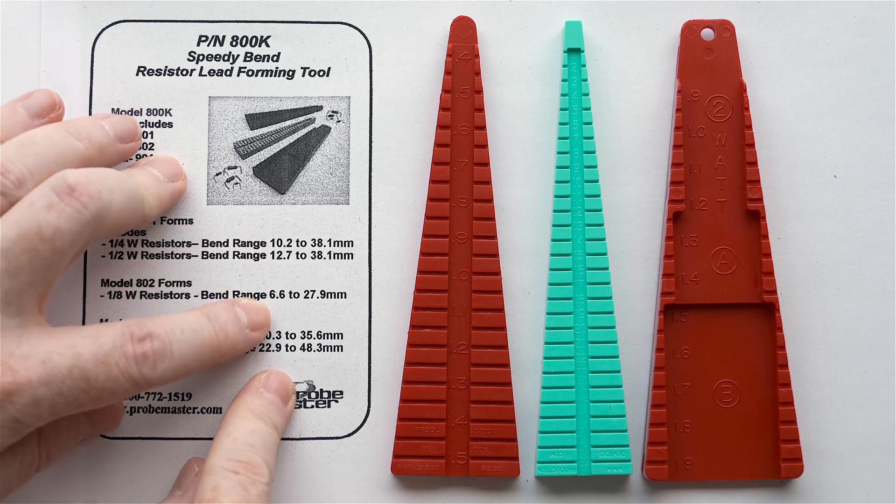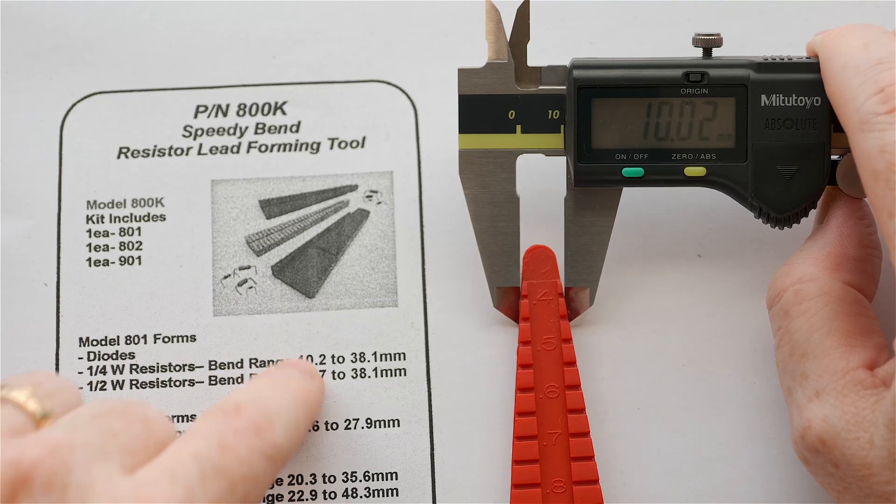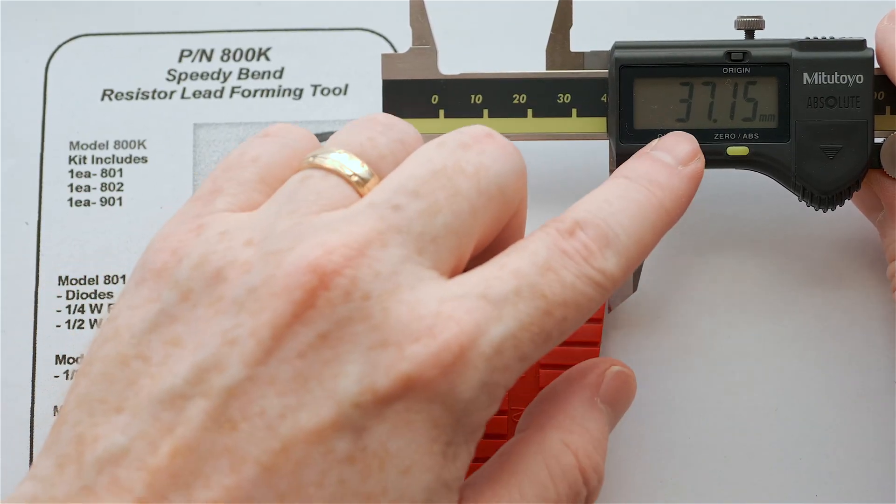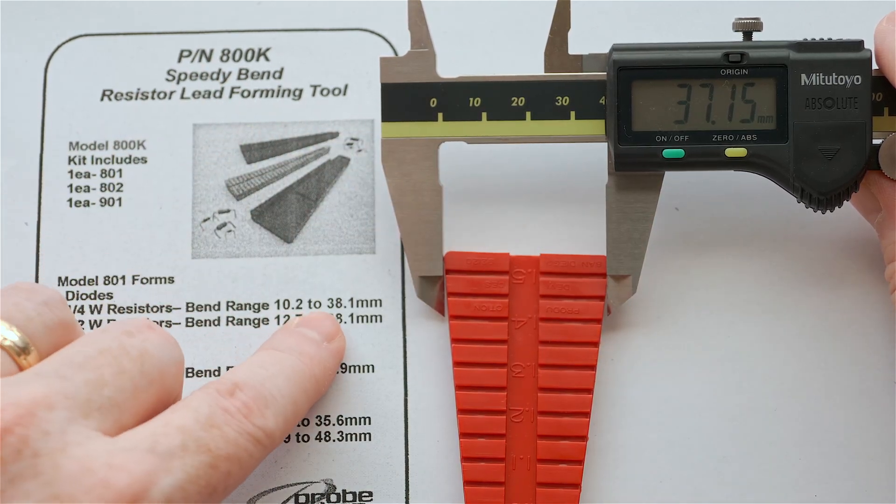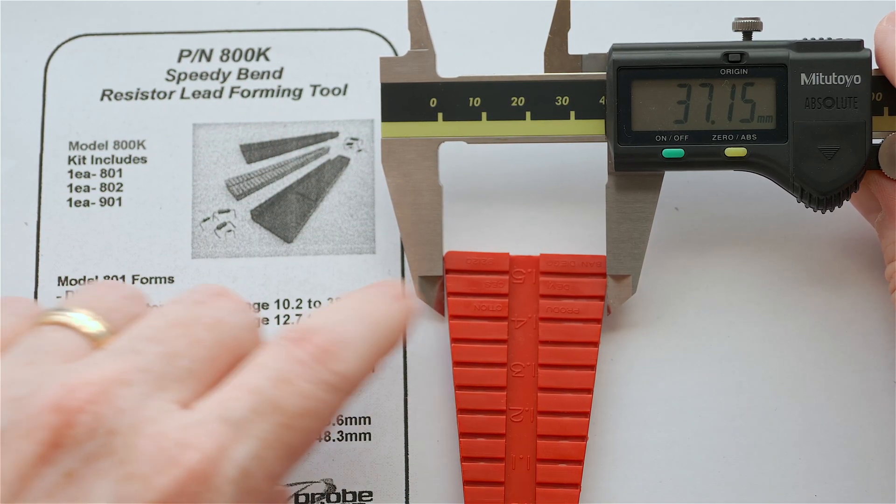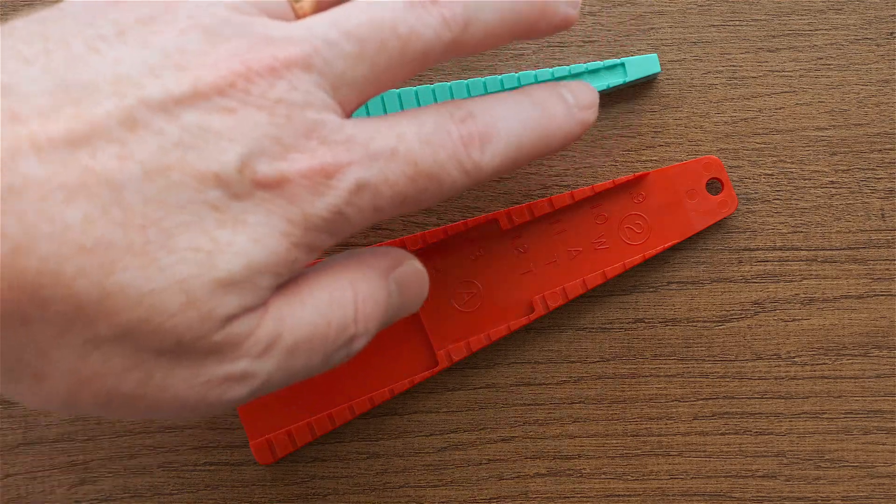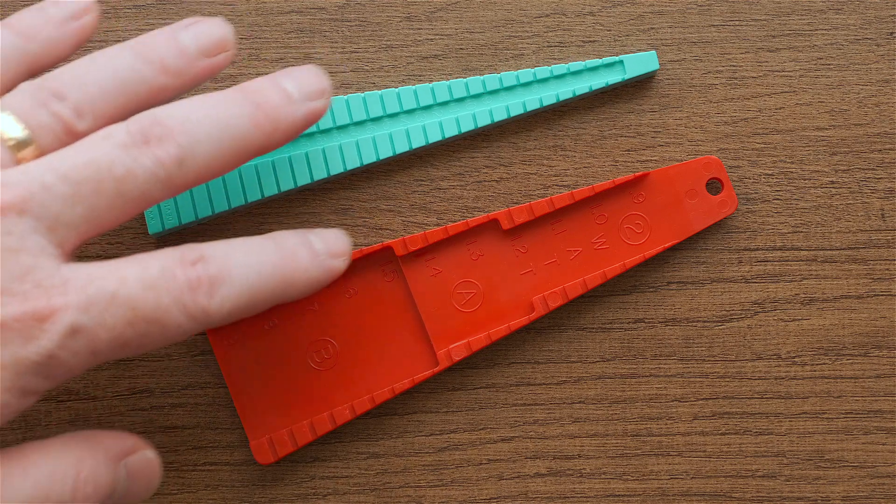Unfortunately, these measurements aren't quite accurate. Instead of 10.2 millimeters, I'm reading 10.02, so it's a little bit off. And on the opposite end, I'm getting 37.15 or 37.2, and it should be 38.1, so that's even more off. And the other two tools measure a little bit off as well, but that's not really a big deal for reasons I'm going to show you now.